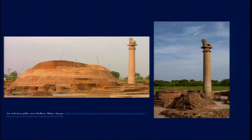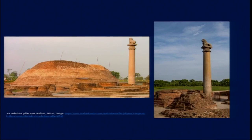In front of the stupa at Kolua near Vaishali we have a lion pillar. Similar to the one at Lorya Nandangar, these pillars follow a kind of template: how the body of the pillar is constructed, then the lotus as a base for the animal motif on top. In some cases the animals are much more naturalistic, in other cases more stylized — these variations depend on the context and location where the pillars were erected.